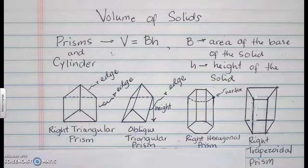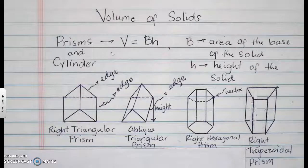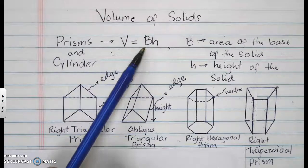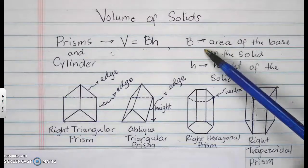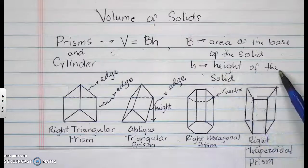Our topic for today is about volume of solids. Prisms and cylinder will follow the same formula for the volume, which is area of the base times the height of your solid. The big B signifies the area of the base of the solid. The H is the height of your solid.